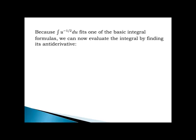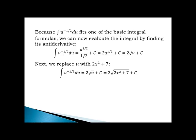Because the integral of u to the negative one-half fits a basic integral formula, I evaluate by finding the antiderivative: u to the negative one-half integrates to u to the positive one-half divided by one-half plus c, which equals 2u to the one-half, or 2 times the square root of u plus c. Replacing u with 2x squared plus 7 gives 2 times the square root of 2x squared plus 7 plus c. Therefore, the integral of 4x divided by the square root of 2x squared plus 7 evaluates as 2 times the square root of 2x squared plus 7 plus c.